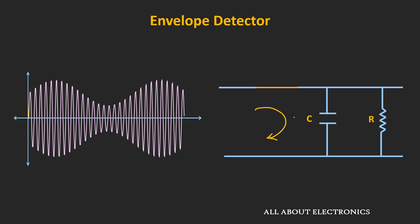Ideally the diode acts as a short circuit, but actually it has some forward resistance. Since this forward resistance is very small, the capacitor will charge very quickly. In other words, the capacitor will follow the input signal and will get charged up to the peak voltage.